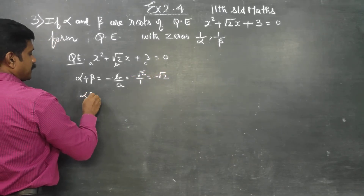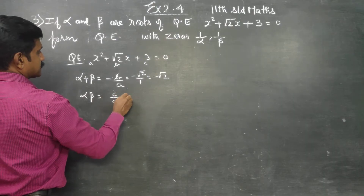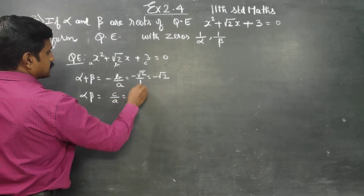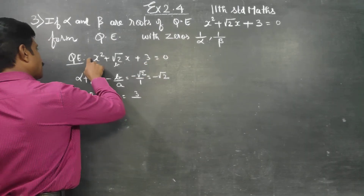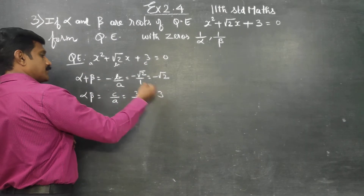Alpha into beta is c by a. Here c is 3 and a, the coefficient of x squared, is 1. So alpha into beta equals 3.